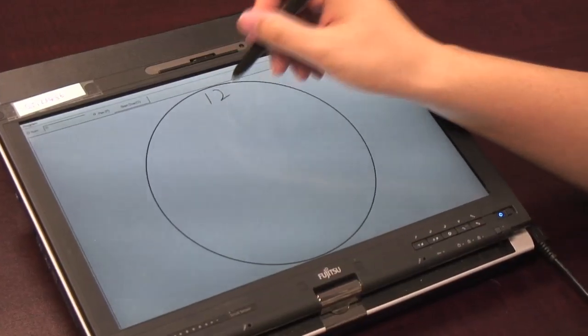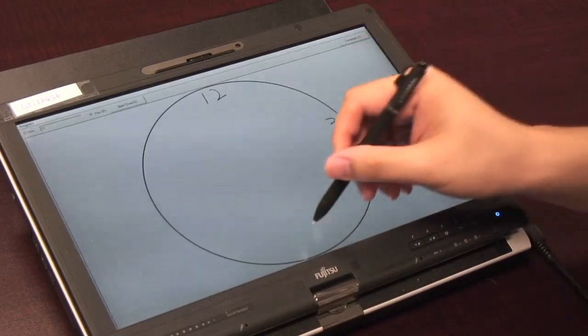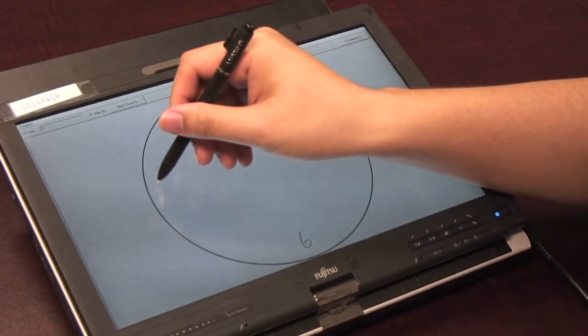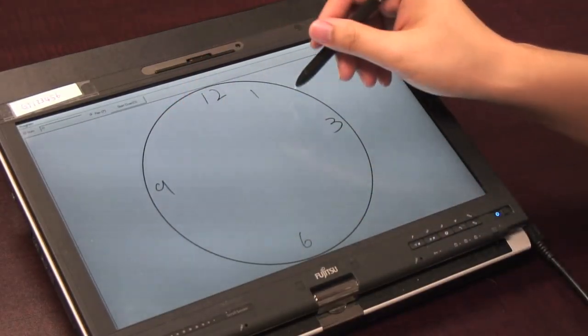In this test, we usually tell people, okay, here is the clock, draw all the numbers of the clock and set the time. Let's set the time to 10 past 11.